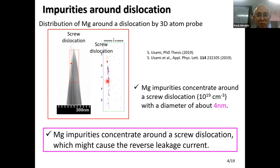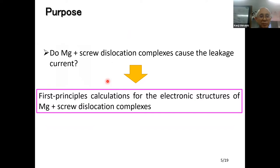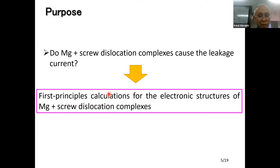However, there is no knowledge about the magnesium–screw dislocation complex. This is the purpose of our study. It is still unclear how leakage current connects to the magnesium–screw dislocation complex. In this study, we clarify the electronic structure of the magnesium–screw dislocation complex using first-principles calculations and discuss the relationship with leakage current.